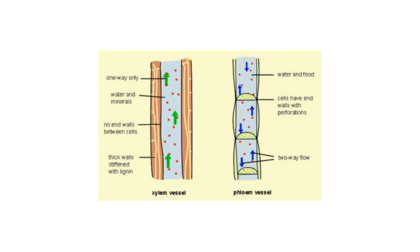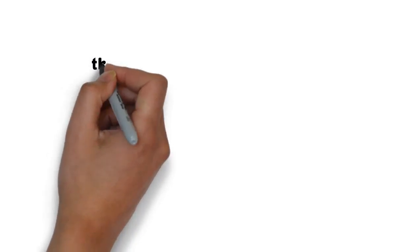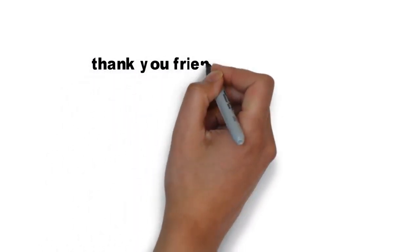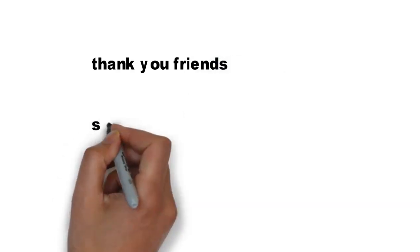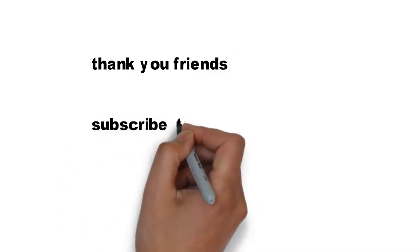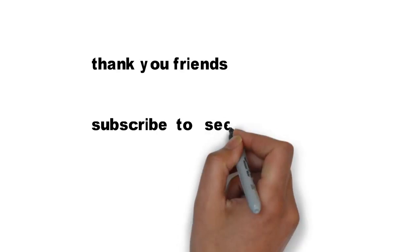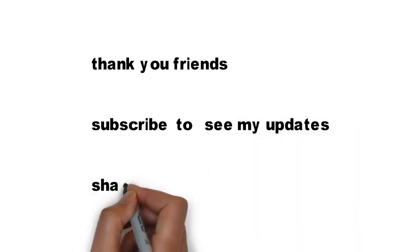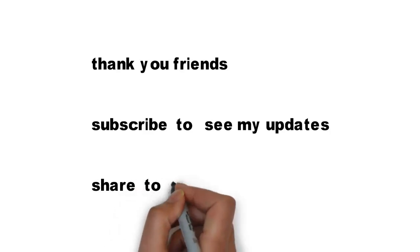In this image you can see: xylem helps in transport of water, and phloem helps in transport of food. Xylem is similar to 'dye' — dye is a form of water. Phloem contains 'o,' and food also contains 'o.' Thank you friends, I hope you understand this trick. Subscribe to see more videos. Have a nice day — we will see you in the next video.